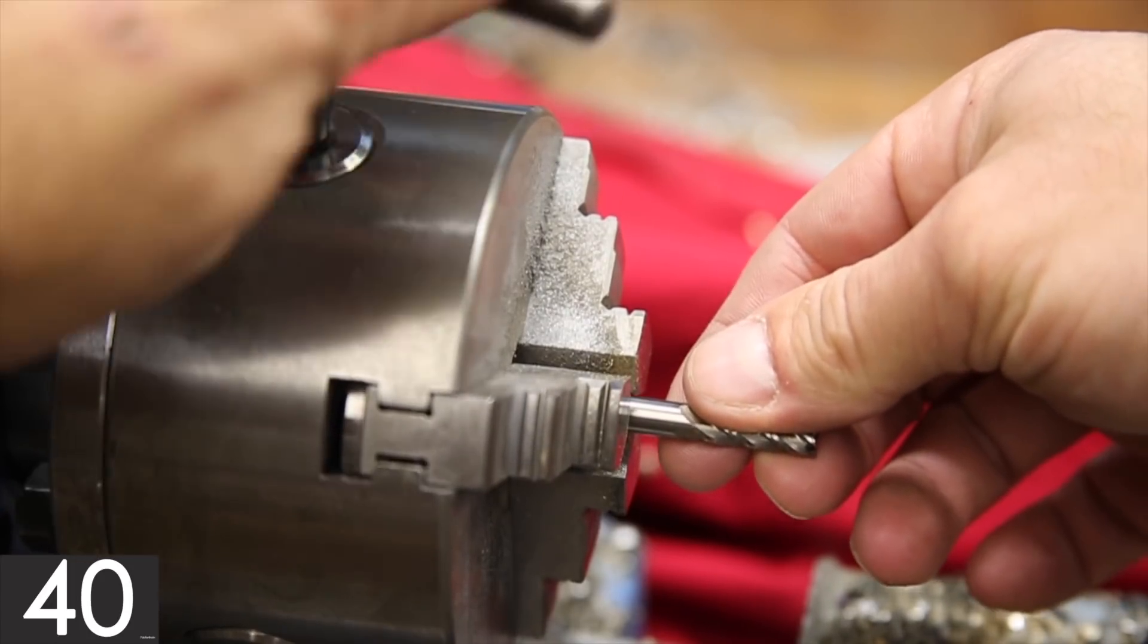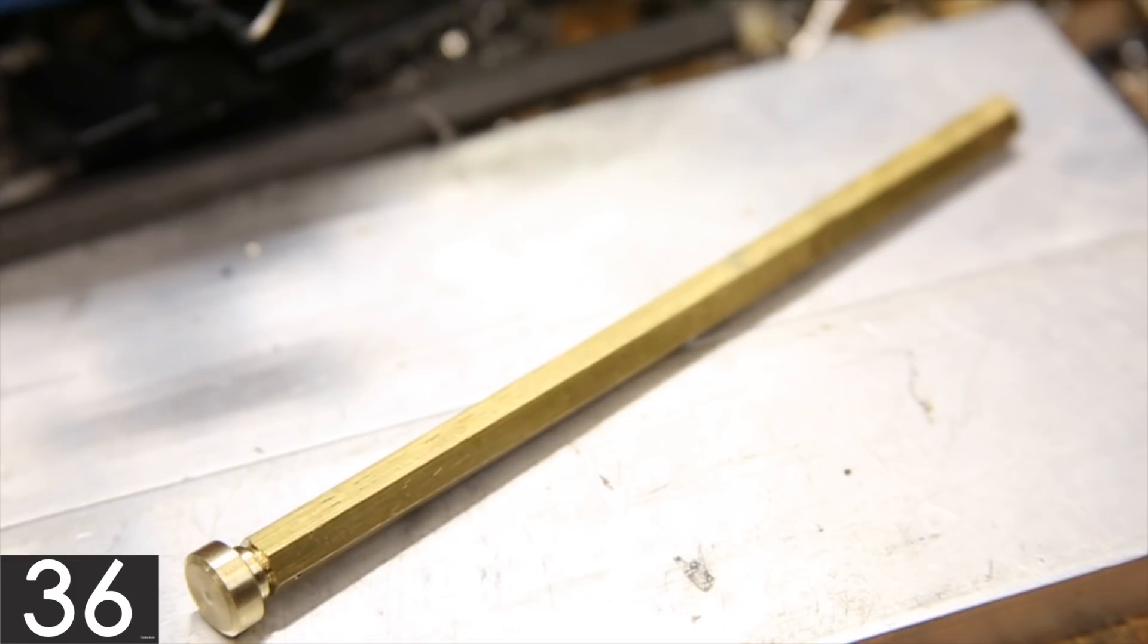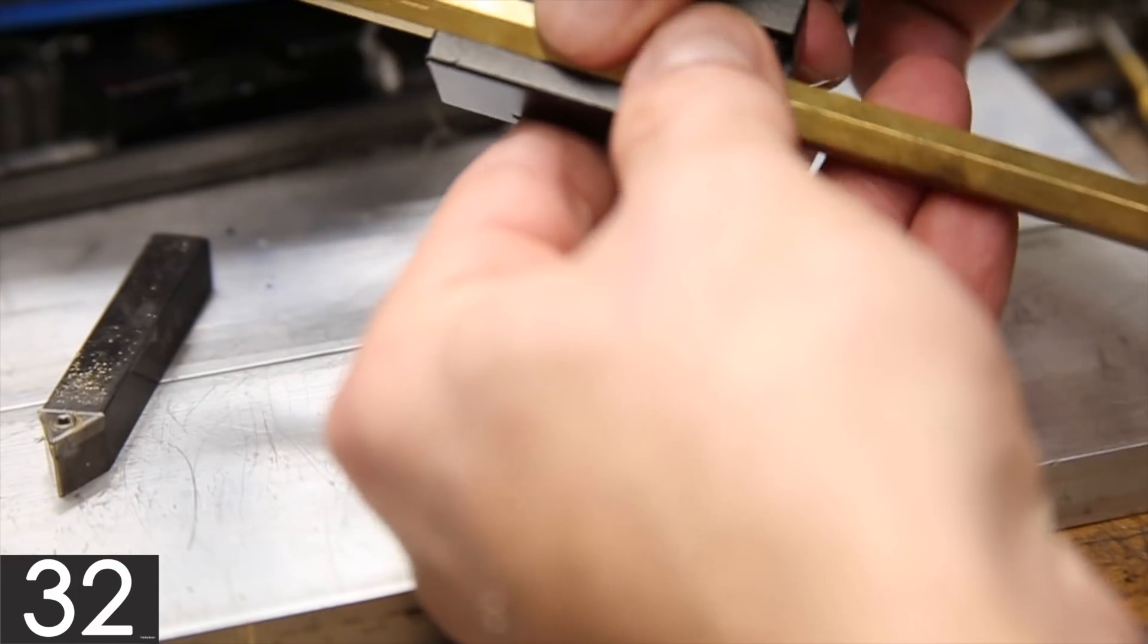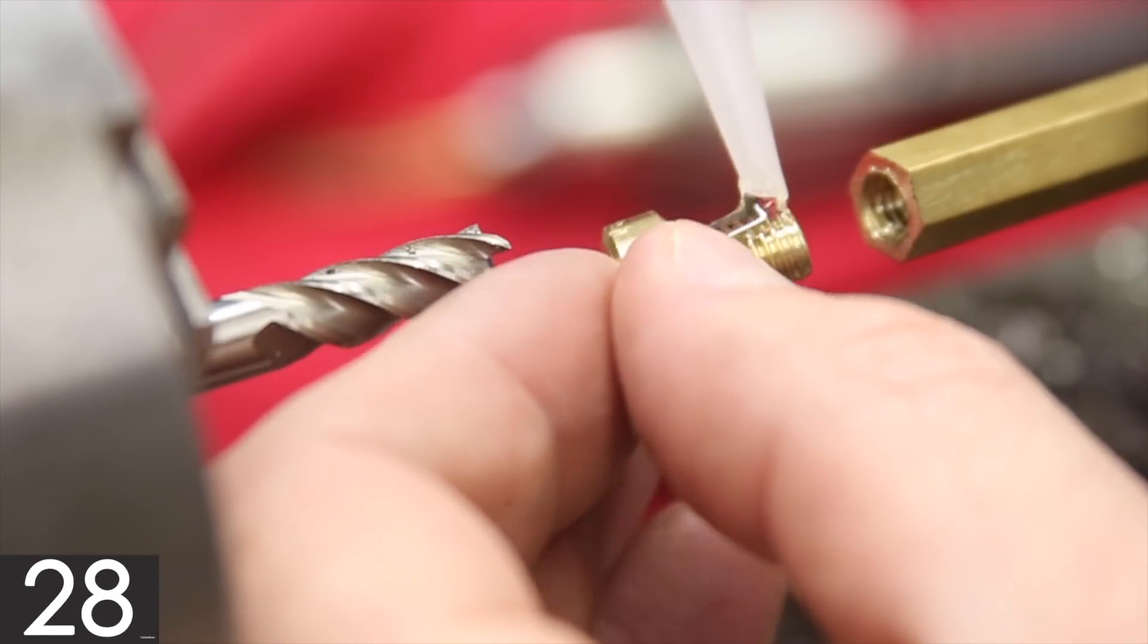The next step is to find a way to securely attach the part to the tool post. In this example I made a jig from some hex stock and mounted it in one of the quick change tool holders. I also added a bit of CA glue to the part to help hold it secure in the jig.